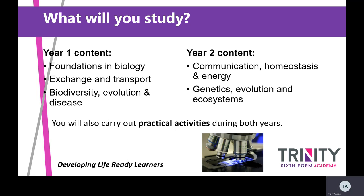In year two, there are two slightly longer modules. You'll look at nerves and homeostasis — how your body controls its internal environment — and the links between photosynthesis and respiration. Then for your final module, you'll study genetics linked with evolution, DNA technology, and big ecosystems including climate change and biodiversity in more detail. This gives you an overview of two years of study, which is enough to take you through to a degree in a biological subject.